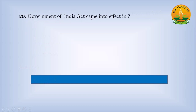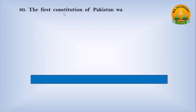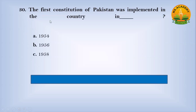The Government of India Act came into effect in: Option A, 1913; Option B, 1919; Option C, 1909. Answer: B — 1919. The first Constitution of Pakistan was implemented in: Option A, 1954; Option B, 1956; Option C, 1958. Answer: B — 1956.